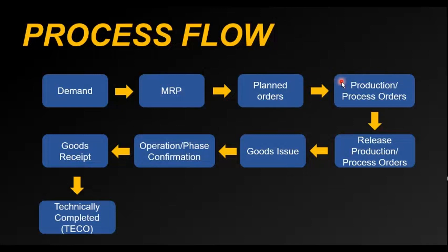The creation of the production order or process order depends on the scenario. In discrete manufacturing we use production orders, but in process-related industries — pharma or food-based industries — we typically use process order scenarios. Once the production order has been created, the next step is to release it.